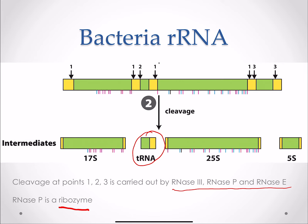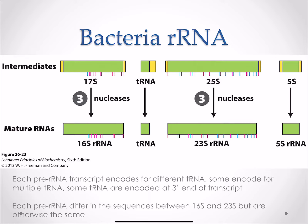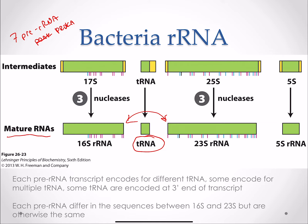Cleavage is carried out by different RNA enzymes. RNase P is a ribozyme. These intermediates are eventually going to become mature RNAs through enzymes that modify them, and your transfer RNA is tucked away inside of your ribosomal RNA transcript. Each pre-ribosomal transcript encodes different tRNAs, and some are going to have multiple tRNAs. There are seven pre-ribosomal RNAs in prokaryotes, and each of those seven will have different numbers of transfer RNAs.